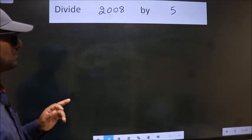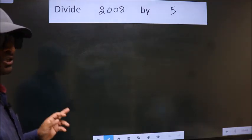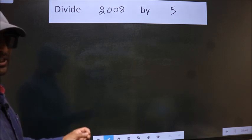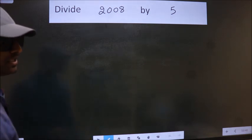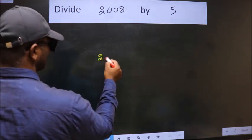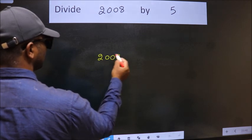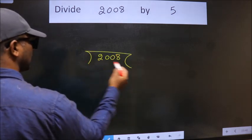Divide 2008 by 5. To do this division, we should frame it in this way: 2008 here, 5 here.